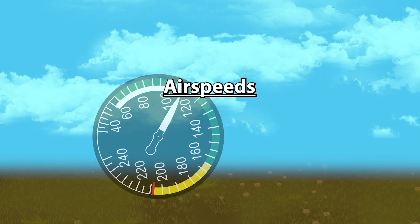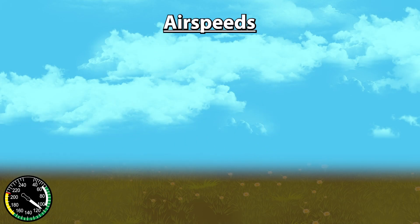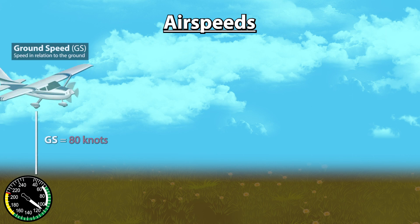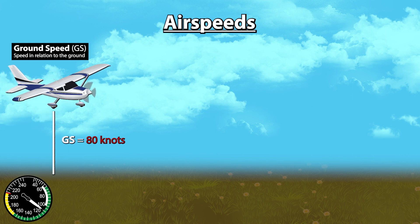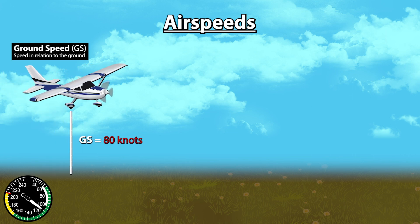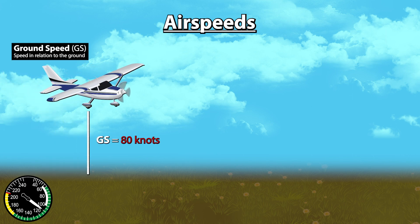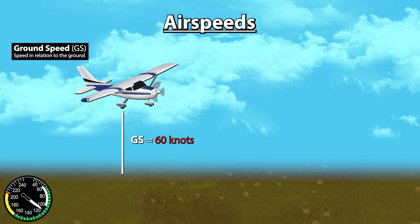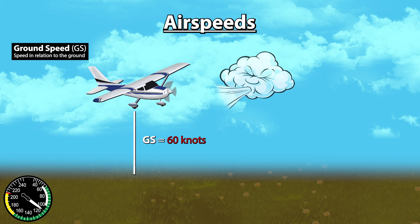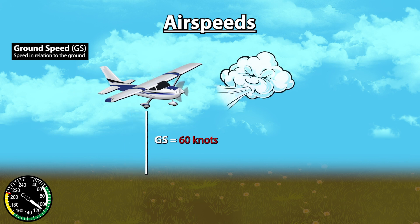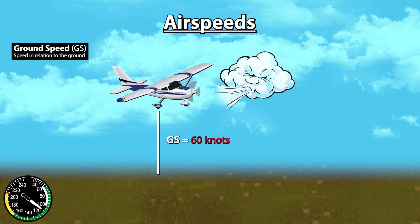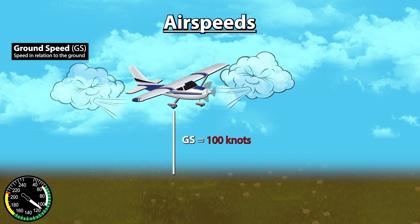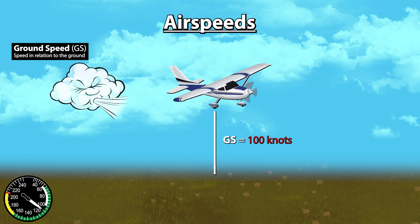Let's talk about airspeeds. There are four you should know and understand. Ground speed is your speed in relation to the ground. It can vary based on the wind conditions. If you are flying into a strong headwind, your ground speed will be slower than if you fly with a tailwind.